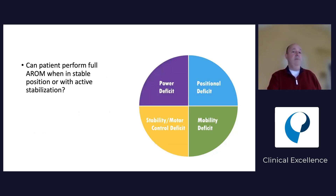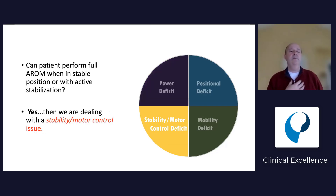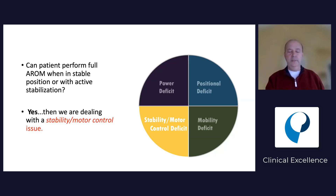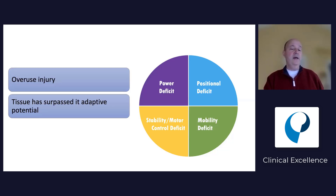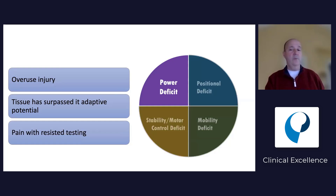If the patient can perform full active range of motion with a stable position, then we think that's more of a stability or motor control issue - the patient is trying to stabilize because gravity is pushing down and they can't move their neck, but as soon as you remove that demand, they have full range of motion. Our priority is more of a stability motor control issue. And lastly, if we look at an overuse injury where tissue has surpassed its adaptive potential, with pain on resistive testing, these are tendinopathies - that is a power deficit.